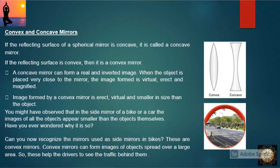We know that the image of an object formed by a plane mirror cannot be obtained on a screen. Let us investigate if it is also true for the image formed by a concave mirror. You might have observed that in the side mirror of a bike or a car, the images of all objects appear smaller than the objects themselves. Can you now recognize the mirrors used as side mirrors in scooters? These are convex mirrors.